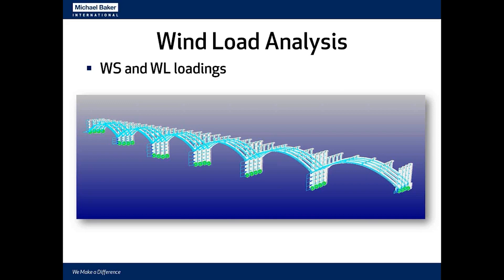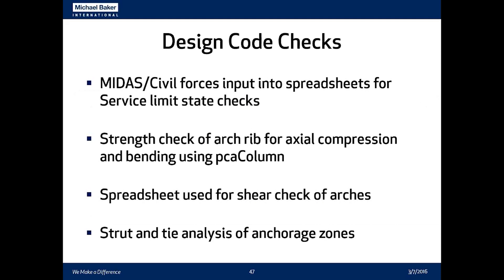For wind loads, since they create transverse bending in the arch ribs, spandrel columns, and spandrel caps, we used a 3D model to determine wind loadings. Our approach of 2D for dead loads and live loads (primary vertical loads) and 3D for wind was a practical simplification — building a construction stage model in 3D would have required significantly more analysis and modeling time. Since each arch end pier is self-supporting with little interaction between arches, the 2D model was confirmed to be a good approach.